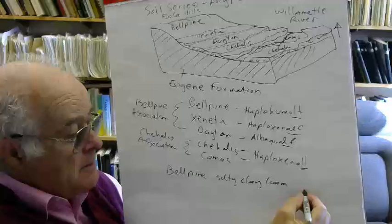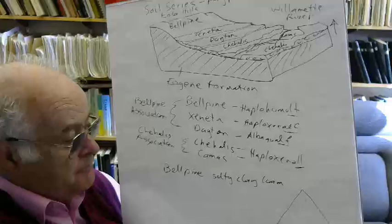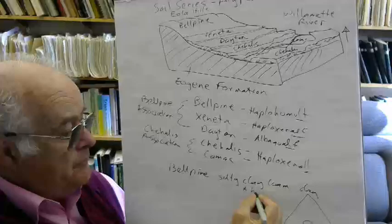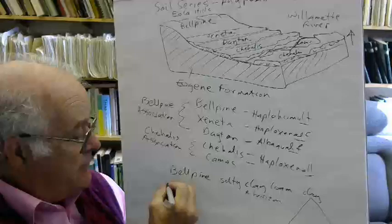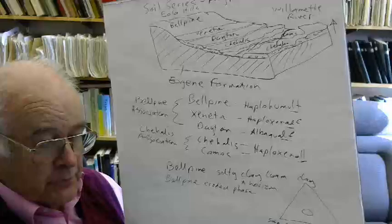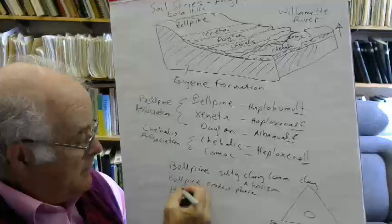We can also be very specific. We can name a particular one, for example, the Belpine silty clay loam. The silty clay loam is a part of the textural triangle that we use in soils, which has sand, silt, and clay. It's defined by the texture of the A horizon. You can name an individual soil.